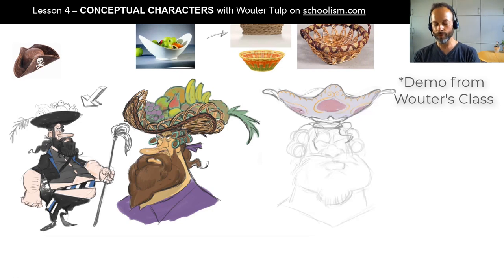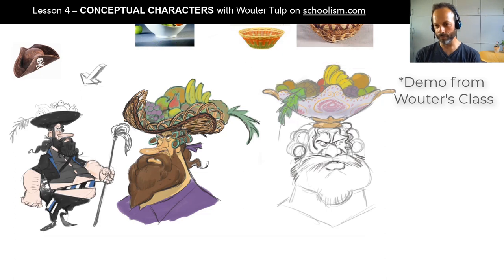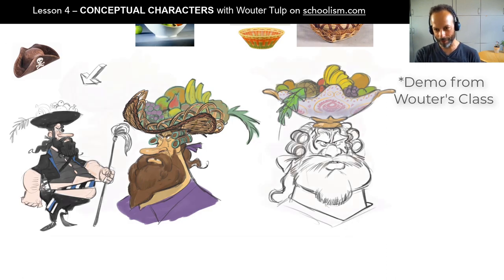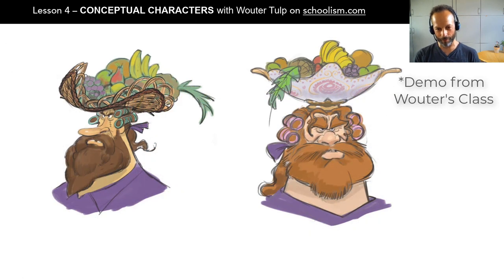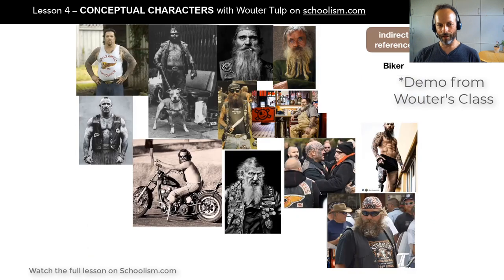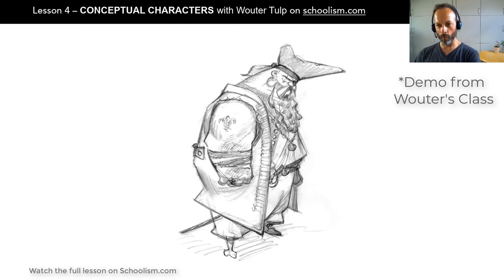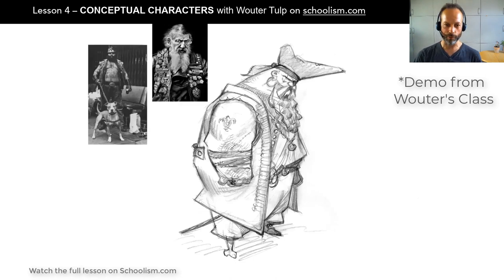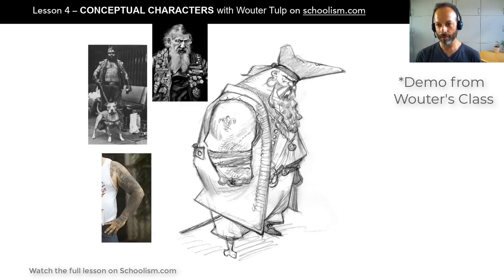You can think of it the same way with a character. If you have to draw a baker, you can just draw the little guy with the white hat — and that's a baker. But you can also look for references. What culture is he from? How old is he? What has he been through? What kind of baker is it — modern or traditional? All those elements, and looking for references to see what that looks like in real life, can help make your design believable.